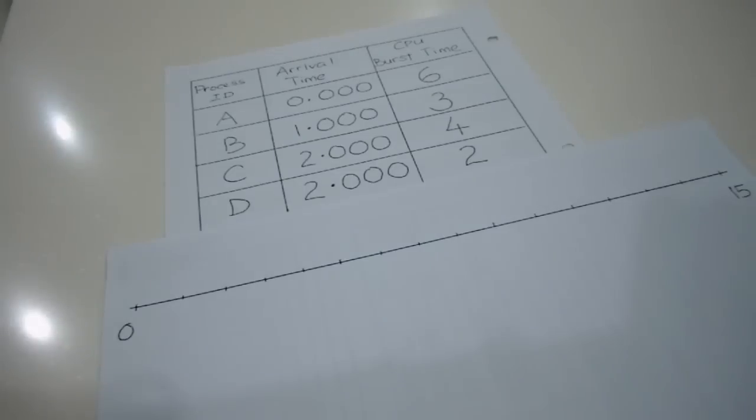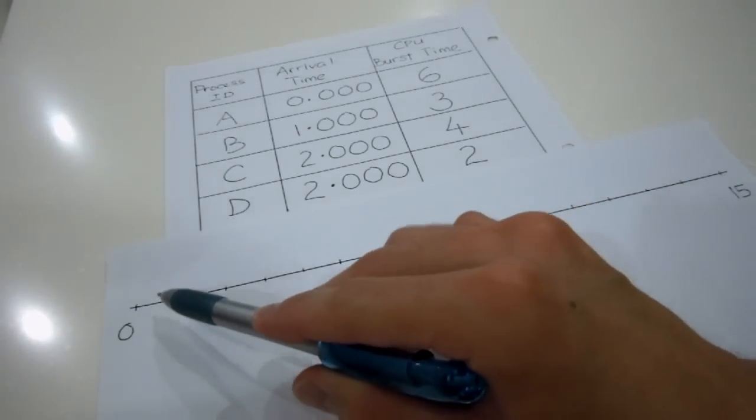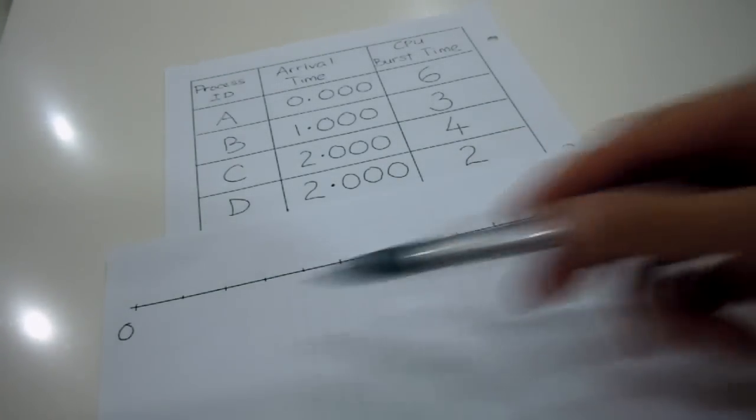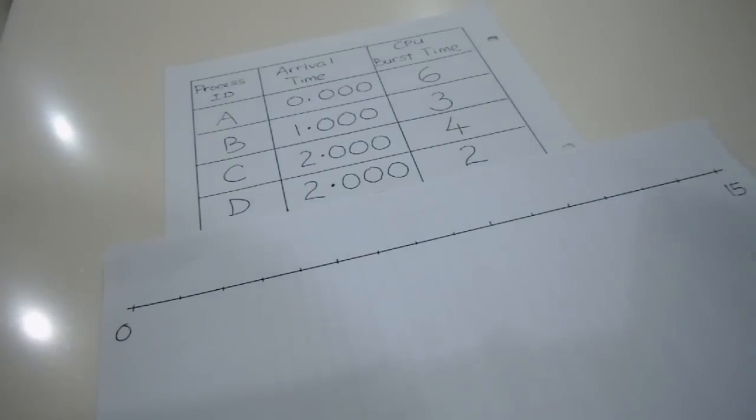So for your case, you can actually put a scale with 1 centimeter equivalent to 1 millisecond and you can draw up the Gantt chart here. So how are we going to start here?